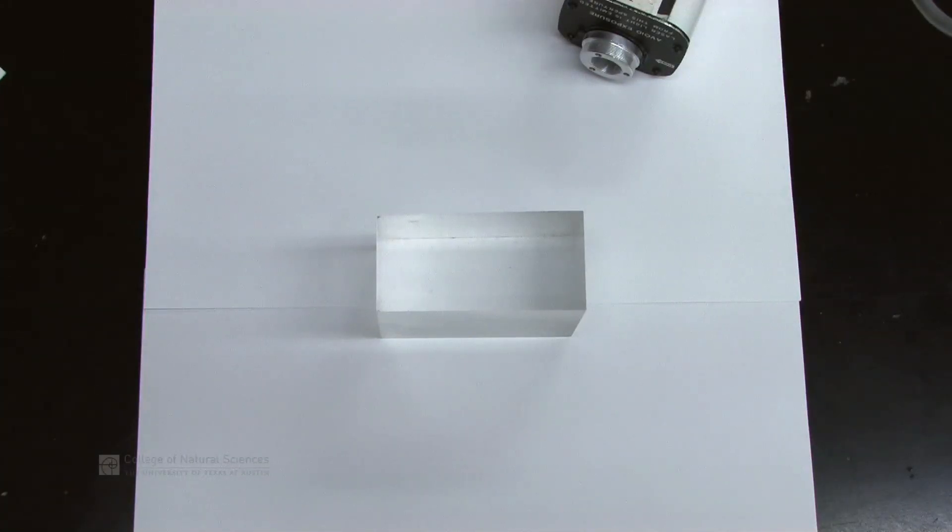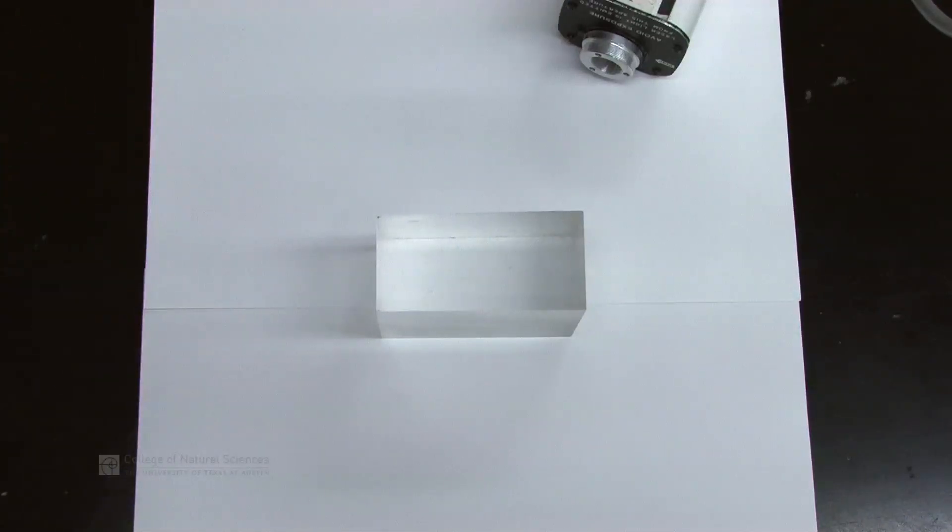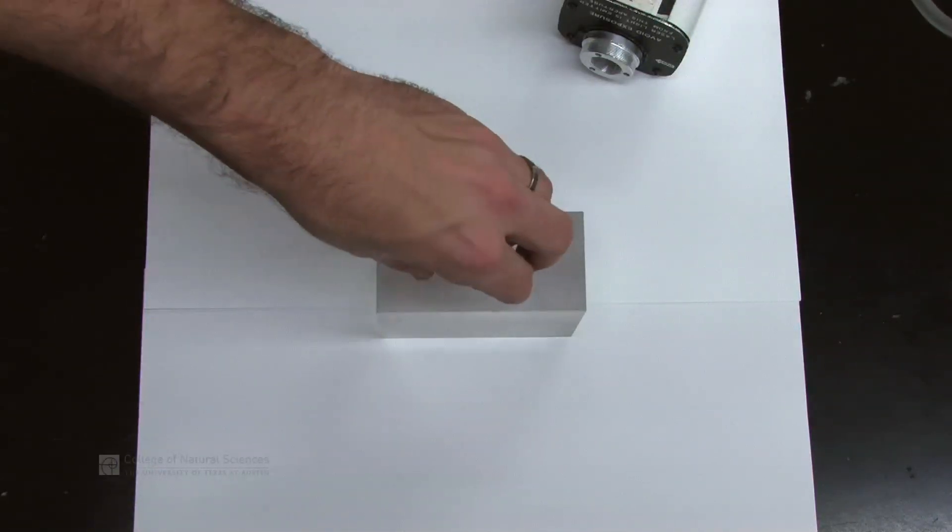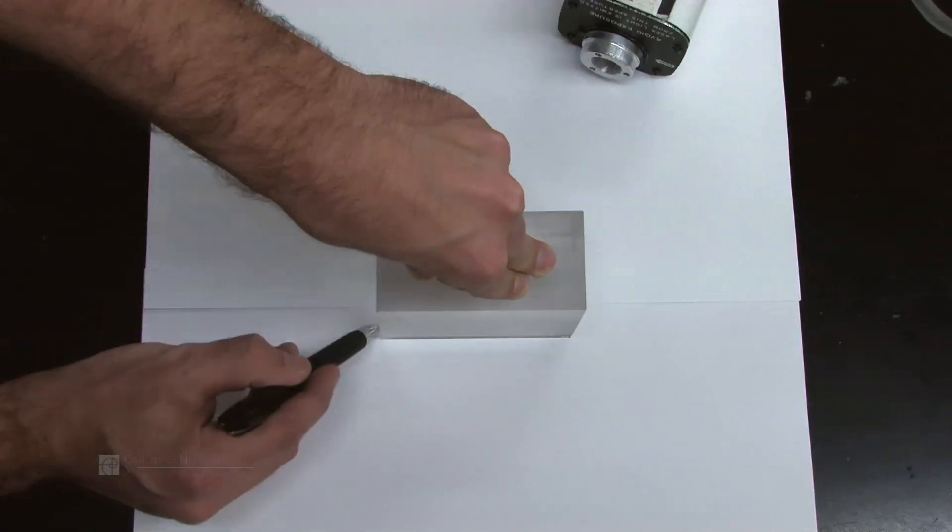When you work on this lab, what we want to do is draw the path that the laser is going to be going. Over here we have a laser, and you can see that the laser will go into the block. Now the trick is to not move anything while you do this. So the first thing I'm going to do is trace out where my block is.